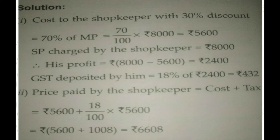Cost to the shopkeeper with 30% discount = 70% of mark price = 70/100 × Rs. 8000 = Rs. 5600. Selling price charged by the shopkeeper = Rs. 8000. Therefore his profit = Rs. 8000 minus Rs. 5600 = Rs. 2400. GST deposited by him = 18% of Rs. 2400 = Rs. 432.